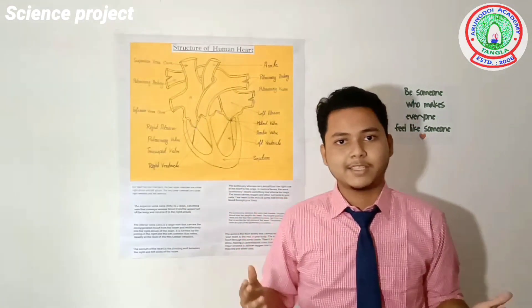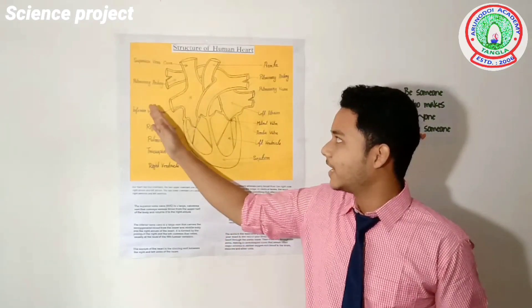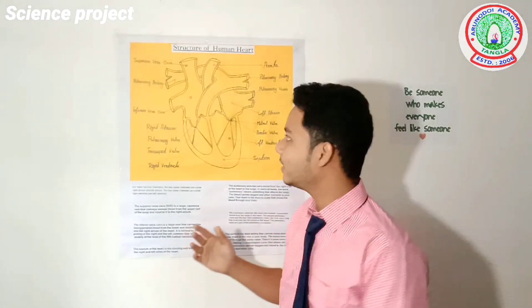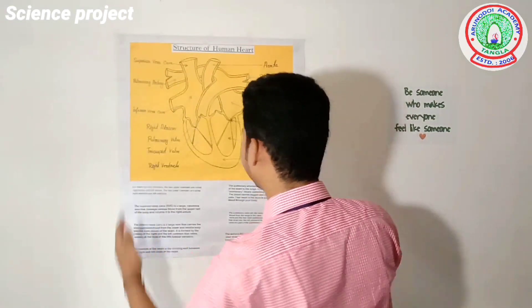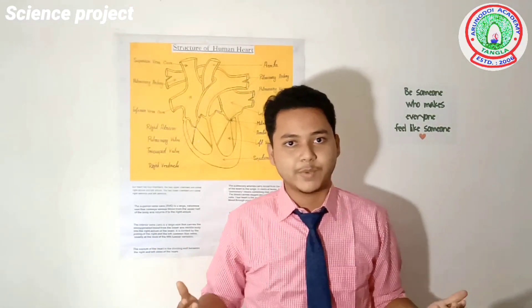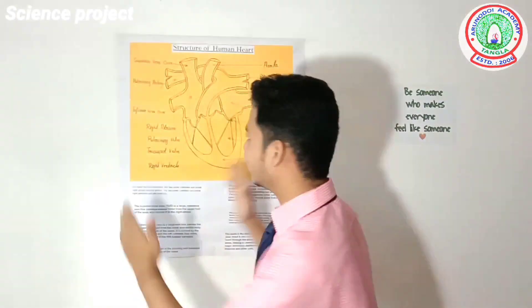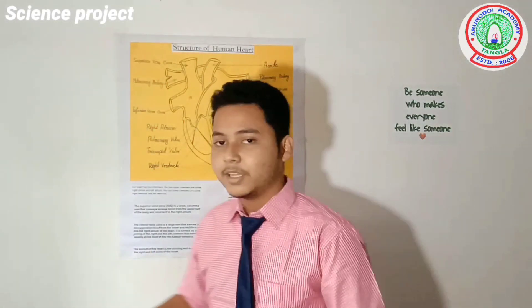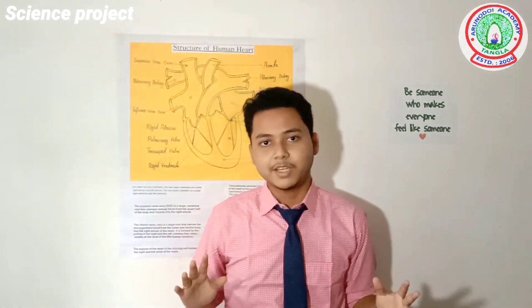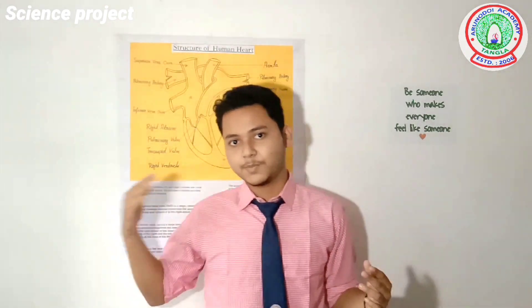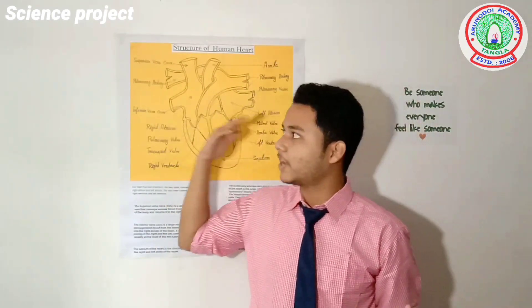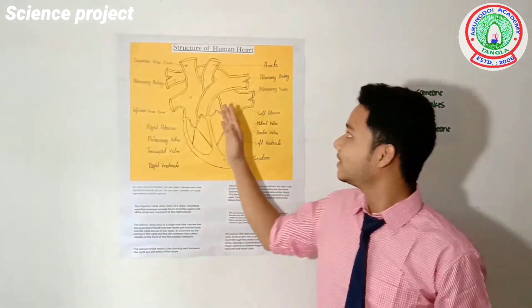A question arises: why have we considered this side as right and this side as left, whereas when we look at the diagram this side appears left and this side appears right? The answer is that when we study anatomy, we consider the diagram from the subject's perspective — so for this heart, this side is its right and this side is its left.